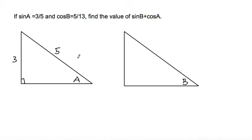And for B, we know that cos B is 5 over 13, so the adjacent side would be 5 since cosine is adjacent over hypotenuse, and 13 would be the hypotenuse. This is the right angle again.